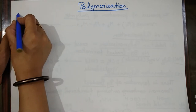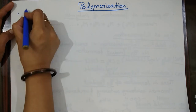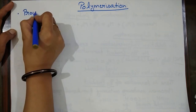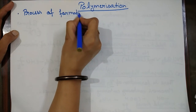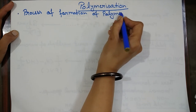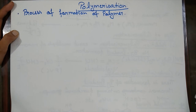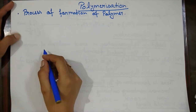Polymerization. First, we have to understand what is polymerization or what we understand by the term polymerization. It is the process of formation of polymer. When monomer units are combined, then it results in polymer formation — this process is known as polymerization.